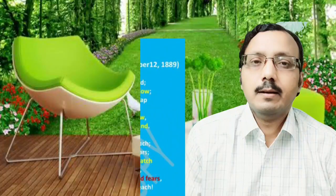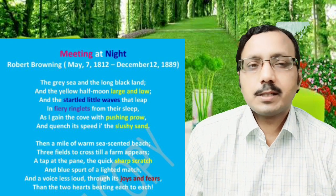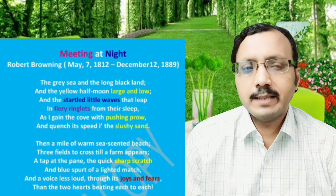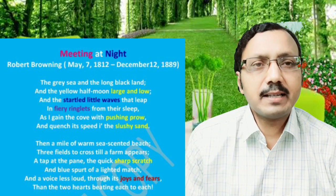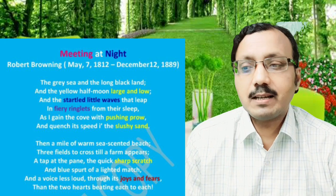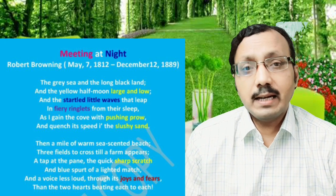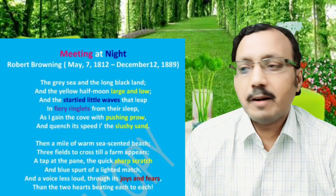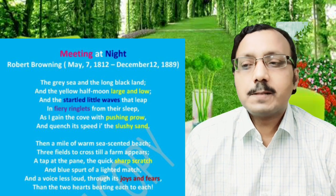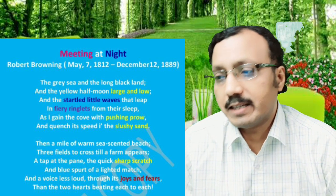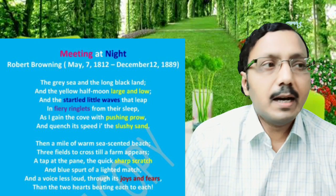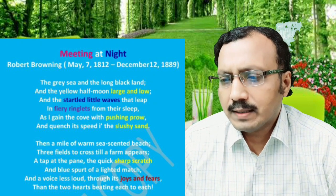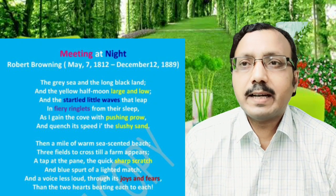Welcome back to my channel Nirmalandhupal. Please like, share and subscribe my channel by clicking on the bell icon. Students, you have in the meantime gone through the lines of 'Meeting at Night' that I dealt in detail in my previous class. The poem is written by no other than Robert Browning, who was born on May 7, 1812 and died on December 12, 1889. Now let us begin the poem once again and have the word notes and annotations in detail in this class.